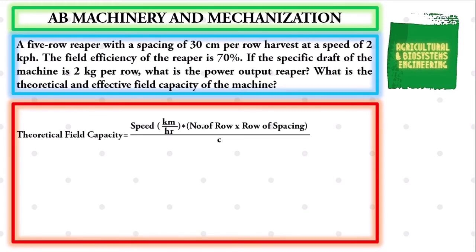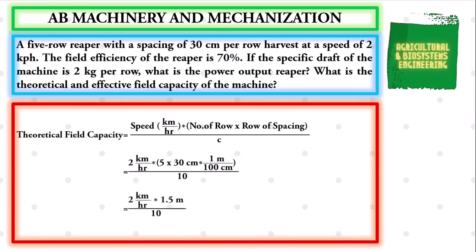The next value to solve is the theoretical field capacity. The formula is the quotient of the product of speed in km/h times the number of rows times the row spacing, all over the constant value of 10. Substituting values: theoretical field capacity equals 2 km/h times 5 rows times 30 cm, converting centimeters to meters using 1 meter equals 100 centimeters, all over 10. This simplifies to 2 km/h times 1.5 meters over 10. The final value for theoretical field capacity is 0.3 hectare per hour.